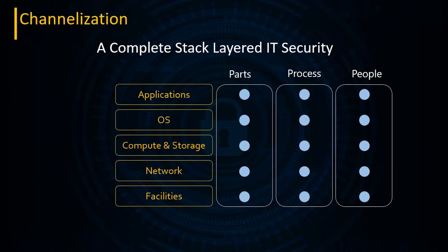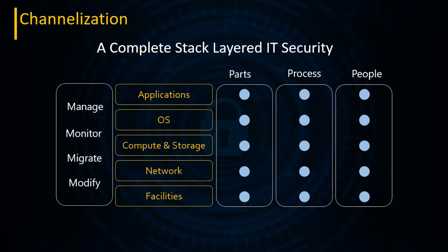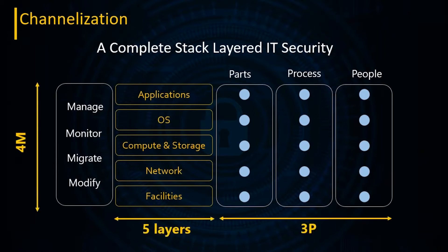What we like to refer to here is the 3P model — to make everything work together securely and productively. There are certain activities you perform on people, process, and parts. We refer to them as the four M's — easy to memorize — and this is effectively our stack approach to channelization: you can manage, monitor, migrate, or modify any of these things.